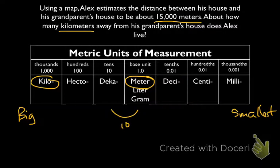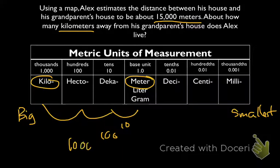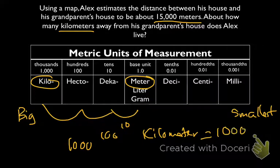Going 2 makes it 100 times bigger, right, 10 times 10. And going 3 over into kilometers makes it 1,000 times bigger. So a kilometer is equal to 1,000 meters. It's about 1,000 times bigger than 1 meter, or we need 1,000 meters to make 1 kilometer.